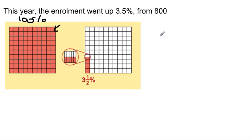So essentially, 1% equals 8. And we are asked to increase our enrollment from last year by 3.5%.